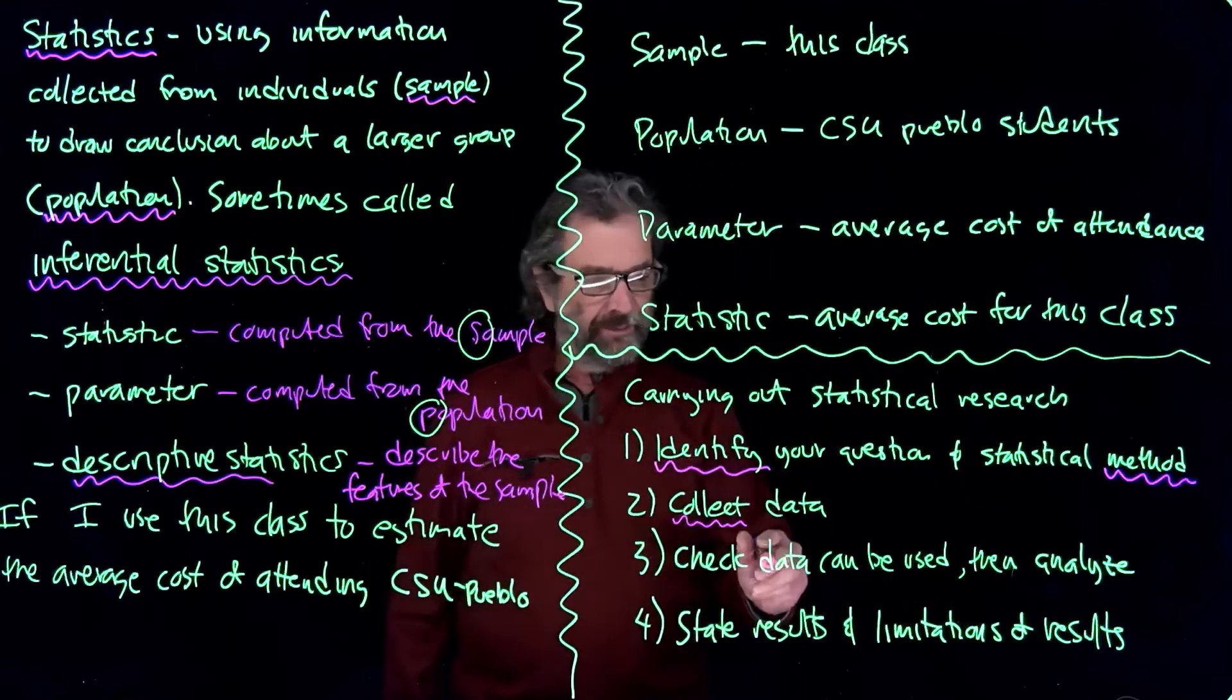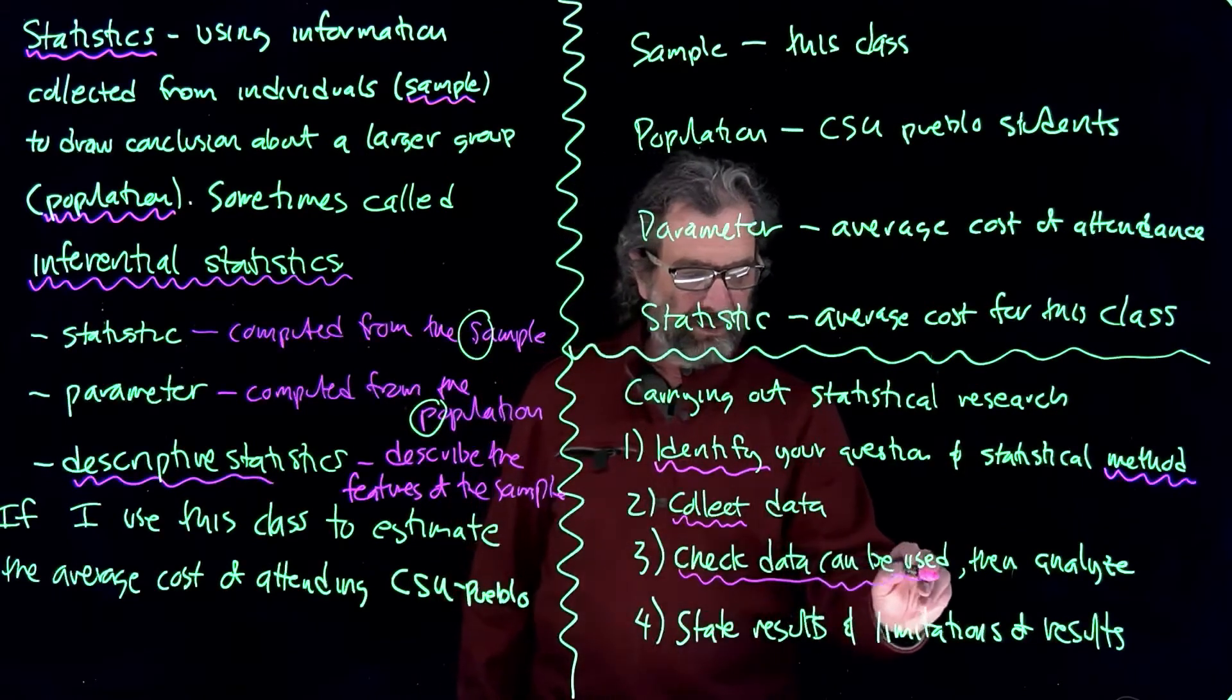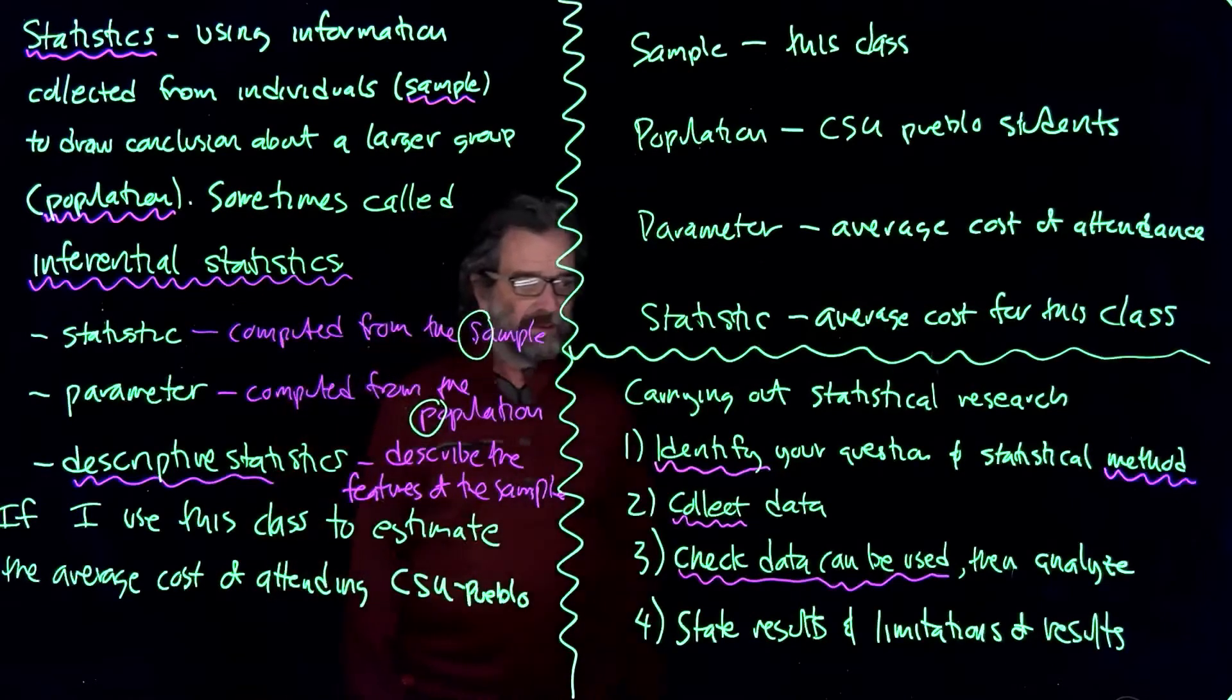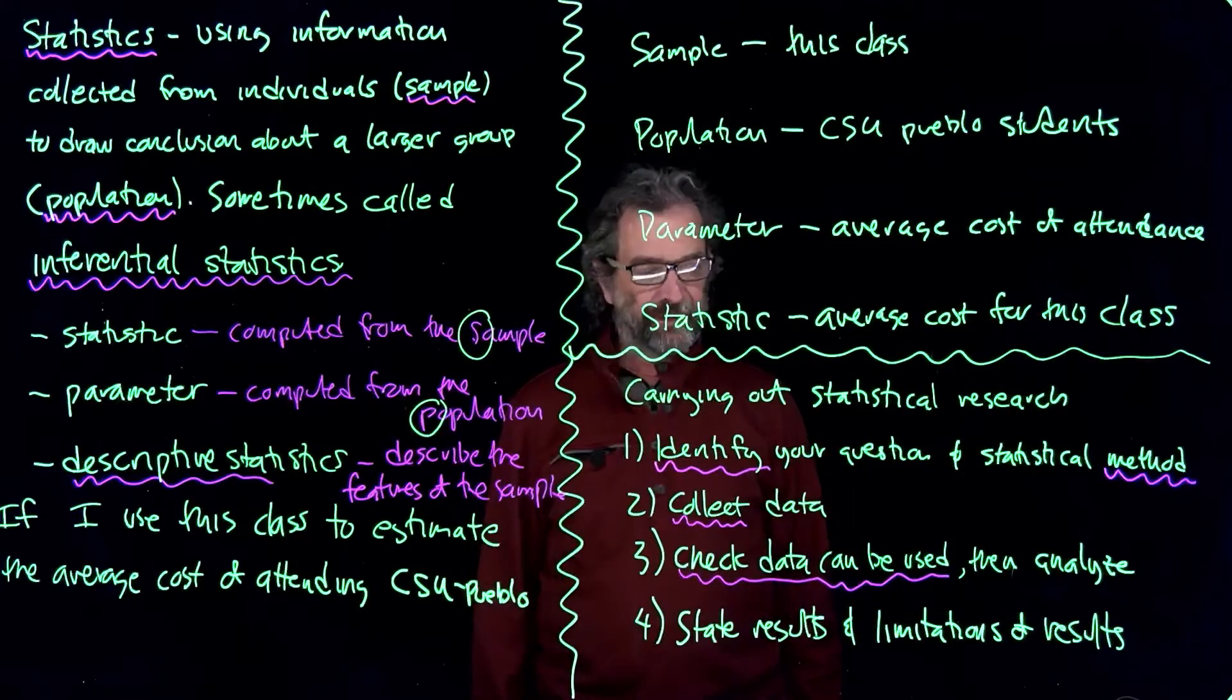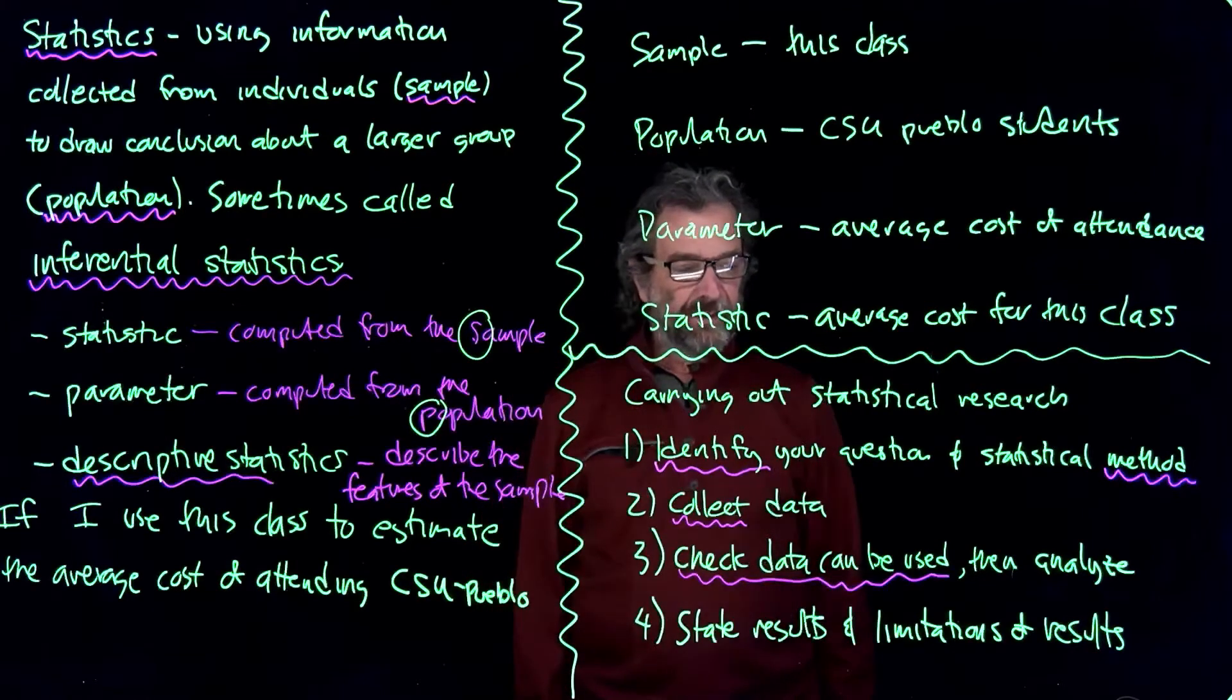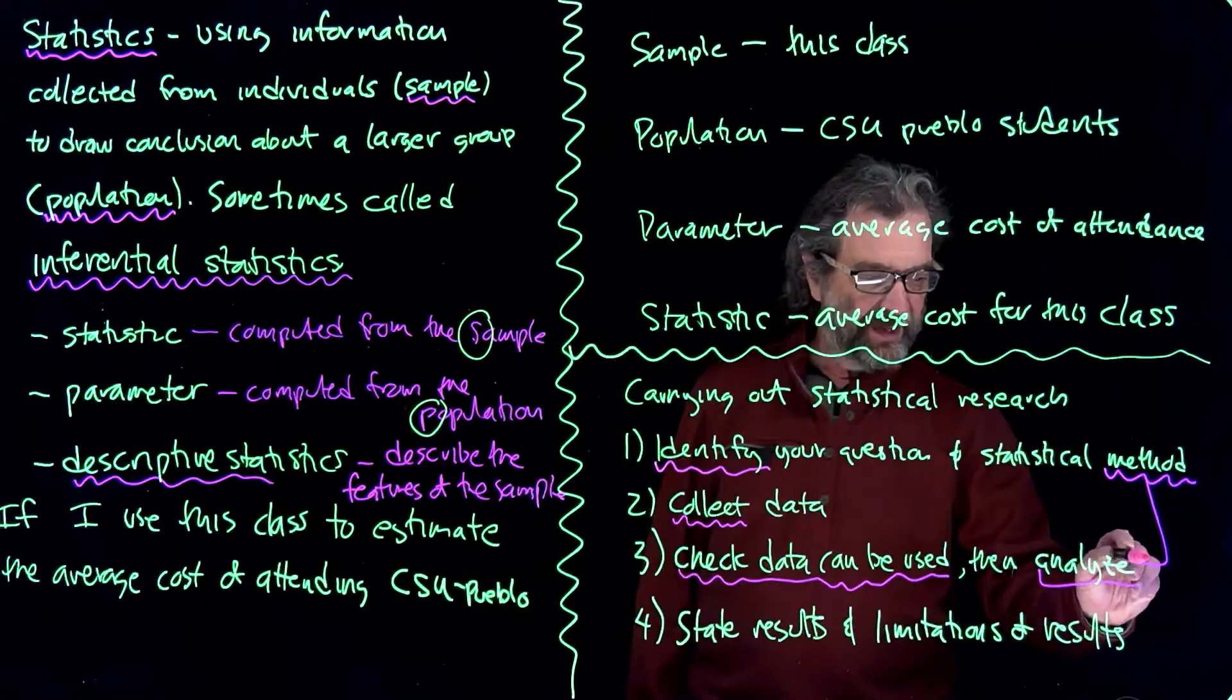So you check your data, check the data can be used. Maybe the people you sent out to collect the information didn't collect it the way you thought and you have to do something else, send it back out in the field to go collect it a different way. Or maybe it's good. If it's good, you go ahead and analyze it. You already chose your method, so use the method to analyze it.